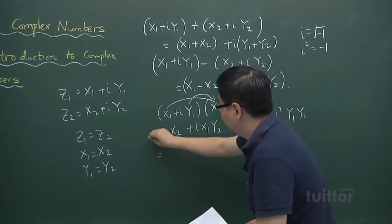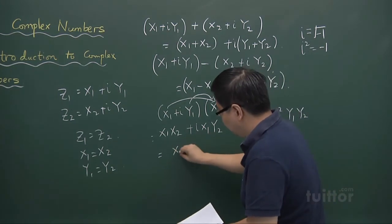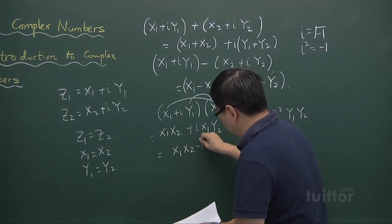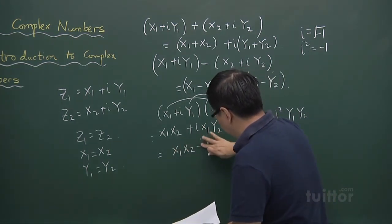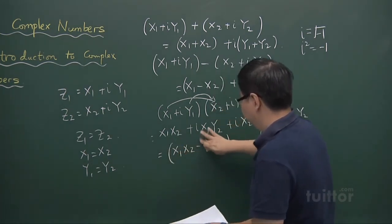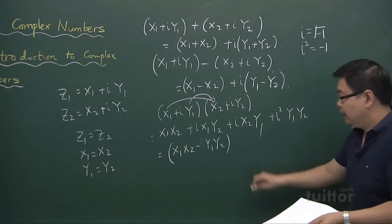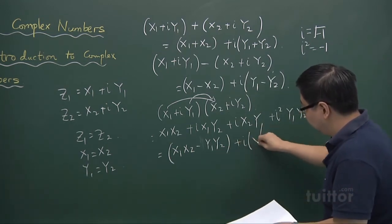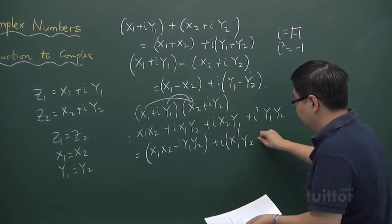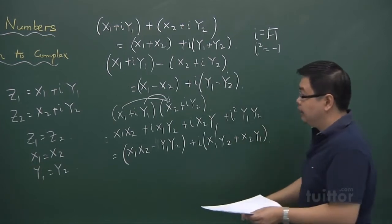So I can write this one as minus y1 y2 to get x1 x2. I have x1 x2 minus y1 y2, because i squared is minus 1. And then gathering the i together, x1 y2 plus x2 y1. That is multiplication.